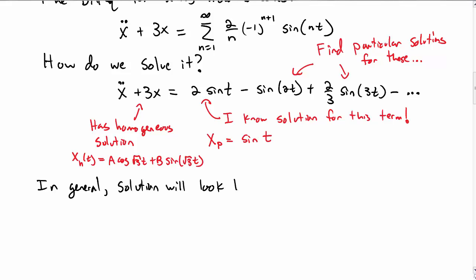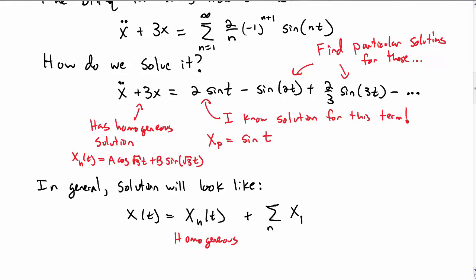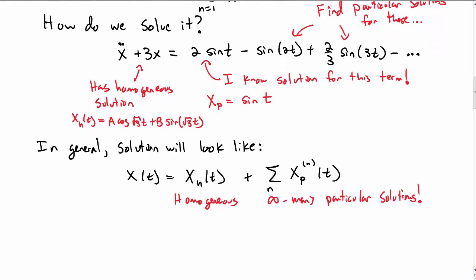In general, the solution x of t will be a homogeneous piece x sub h, plus an infinite sum of particular solutions labeled by n. This is what my solution x of t is ultimately going to look like.